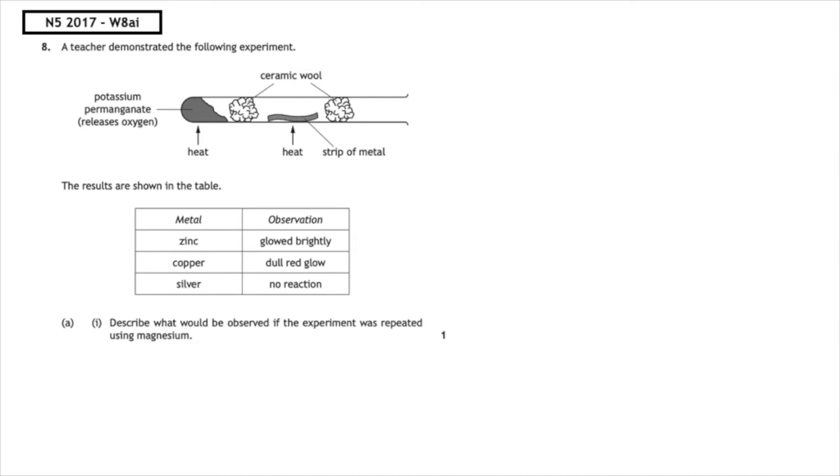This past paper questions from the National 5 2017 written 8A part 1. A teacher demonstrated the following experiment and the results are shown in the table. Describe what would be observed if the experiment was repeated using magnesium.